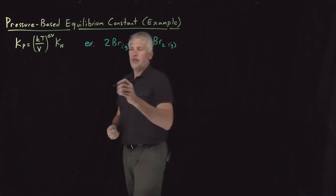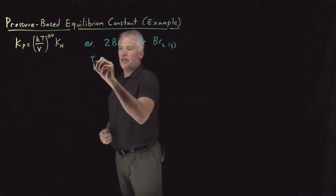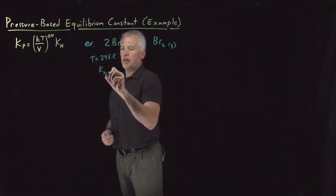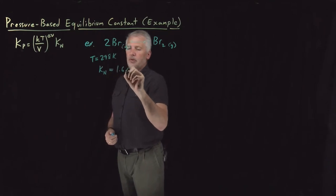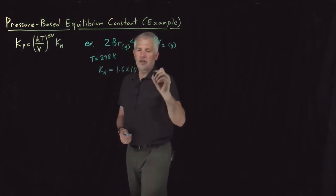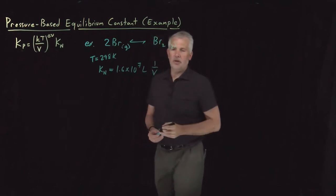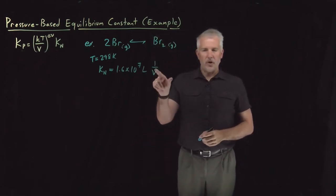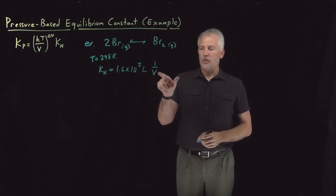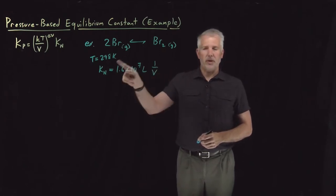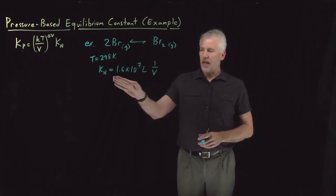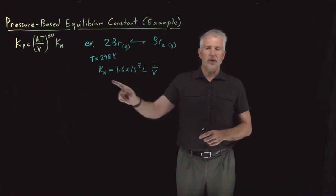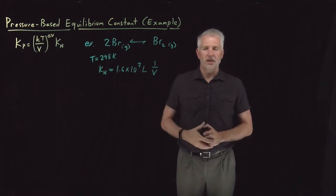For this specific reaction at 298 Kelvin, the equilibrium constant Kn is equal to 1.6 times 10 to the seventh liters times one over the volume. If we were doing that in a volume of one liter, the one-over-one-liter would cancel the units of liter and that would be our equilibrium constant. As long as we're at 298 Kelvin, it doesn't matter what the volume is — we can compute what the equilibrium constant is with this expression.